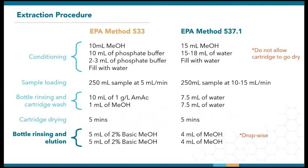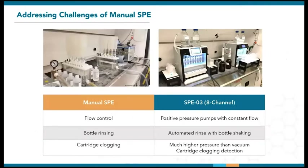Manual extraction is going to require full attention, especially when more samples are involved. A fully automated solution can therefore not only free up lab personnel but also ensure that all steps are performed correctly. The similarities in procedure and solvents used mean that both methods can be performed on the same automated extractor, as long as it has 5 or more solvent lines. Compared to manual extraction, the SPE03 is designed to achieve better flow control, automatic bottle rinsing, and higher resistance to cartridge clogging.